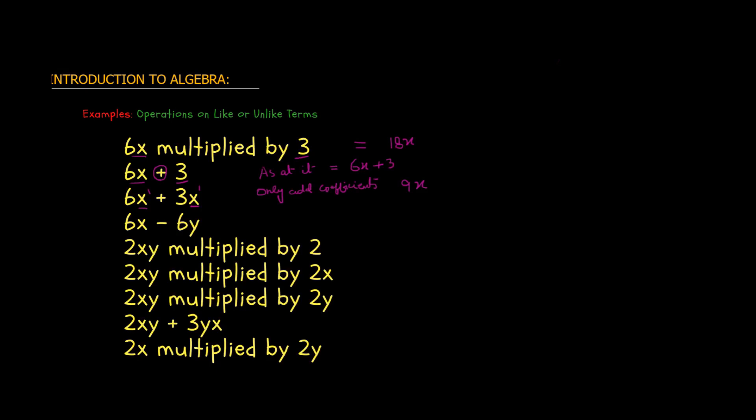Now 6x minus 6y. These are clearly unlike terms, so both terms stay the same. The answer is 6x minus 6y.